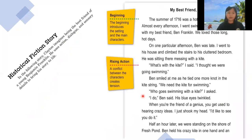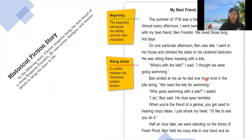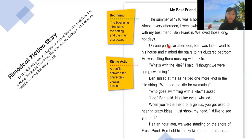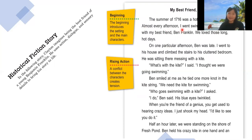First, let's get into historical fiction stories. Here is an example I will show you. There are three parts in a story: a beginning, middle, and end. First, I'll be talking about the beginning. The beginning is where you introduce the setting and the main characters. Let's see if you can figure out what the main character and the setting are.